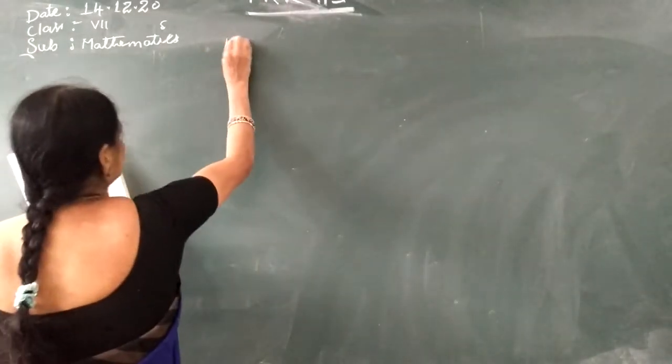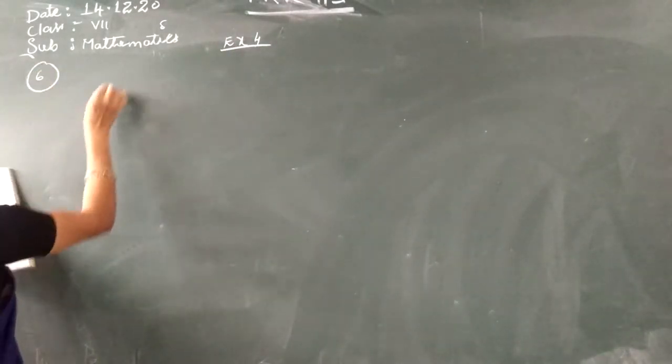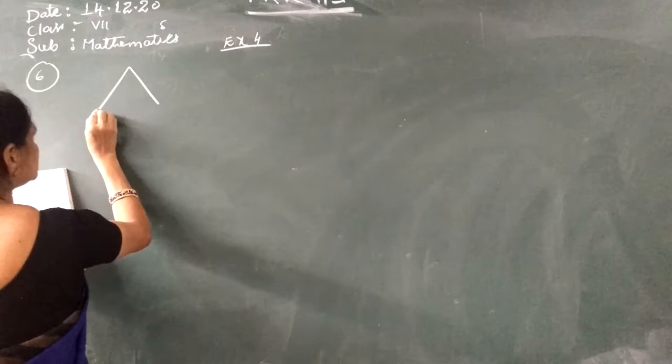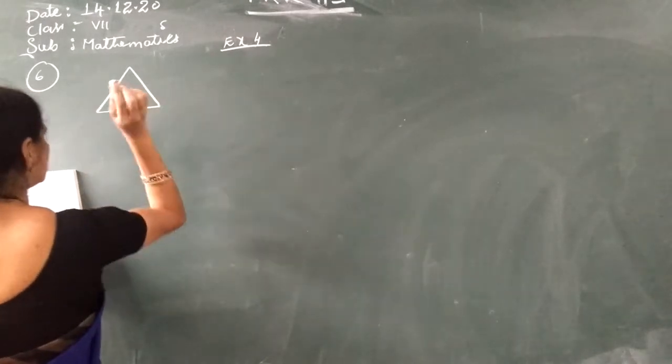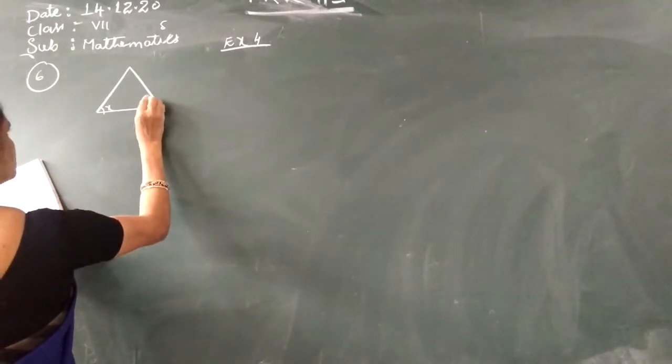Now see this exercise problem. In this exercise problem, find the values of X and Y. I will show both. See, X is side 4, this angle is 61. See this triangle — this is X and this is Y.